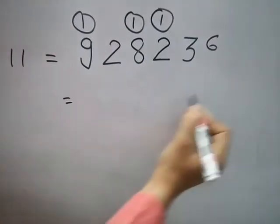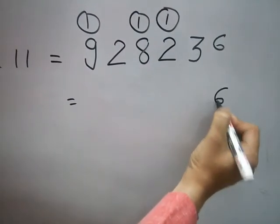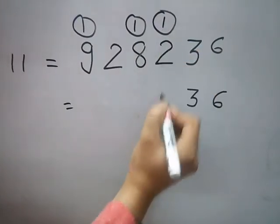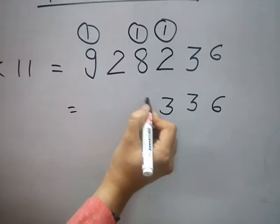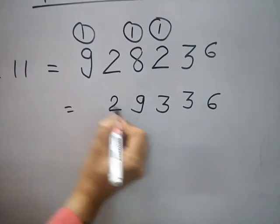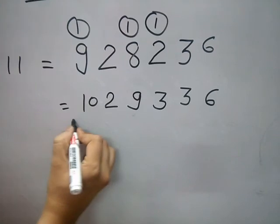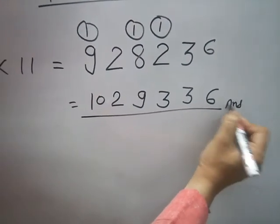Now our answer is: 3, 2 plus 1 is 3, 8 plus 1 is 9, 2, 9 plus 1 is 10. This is the multiplication.